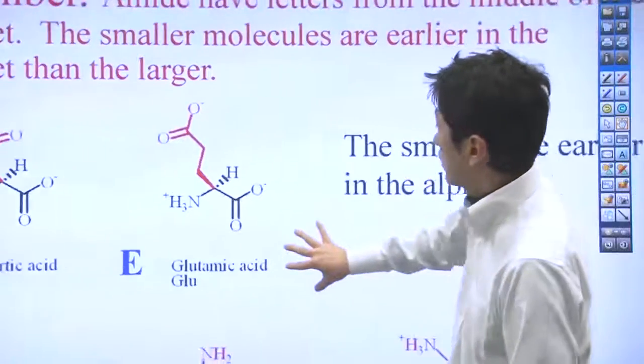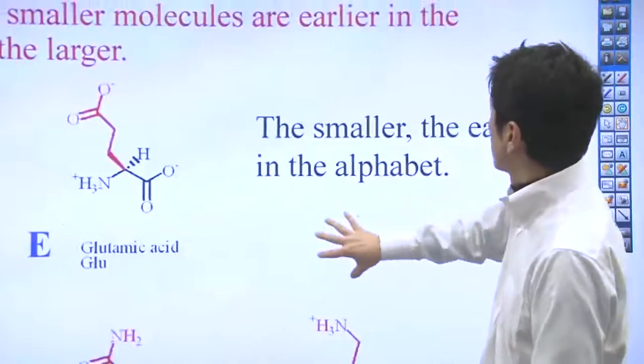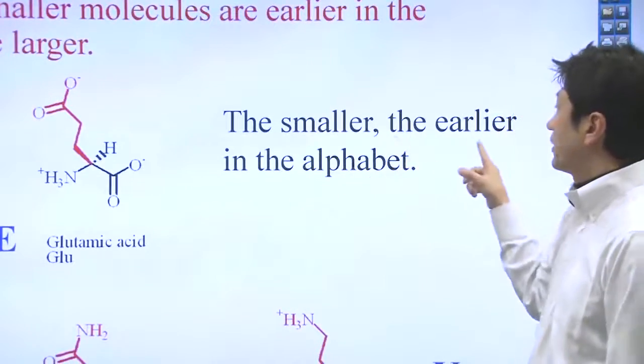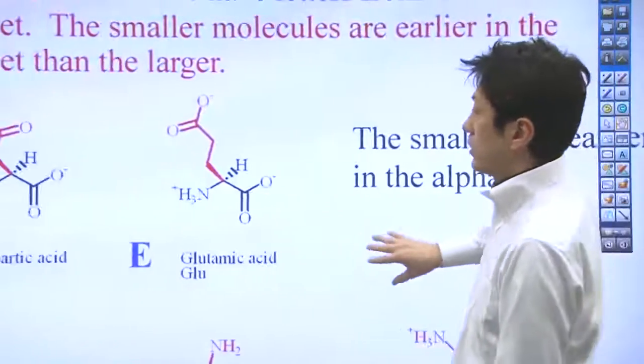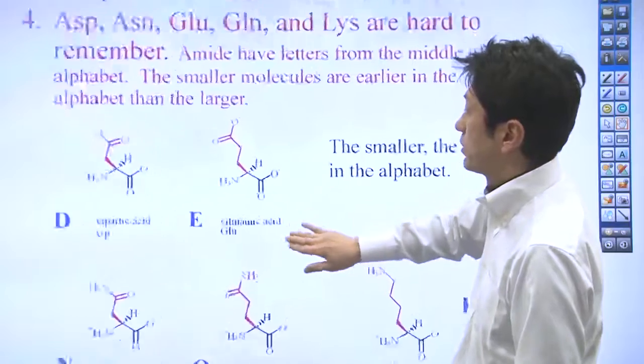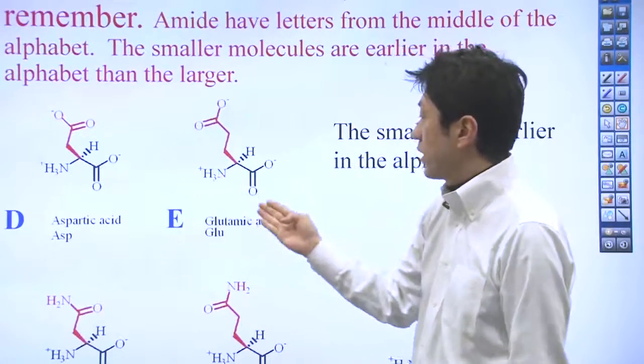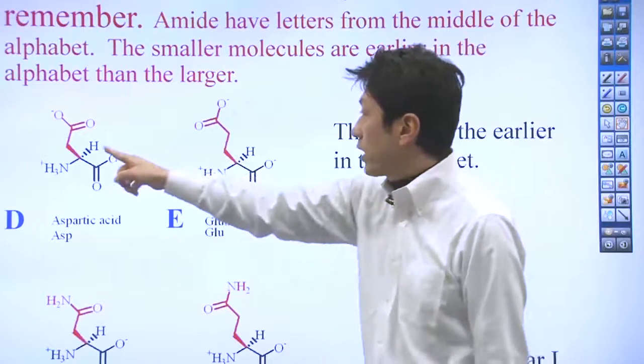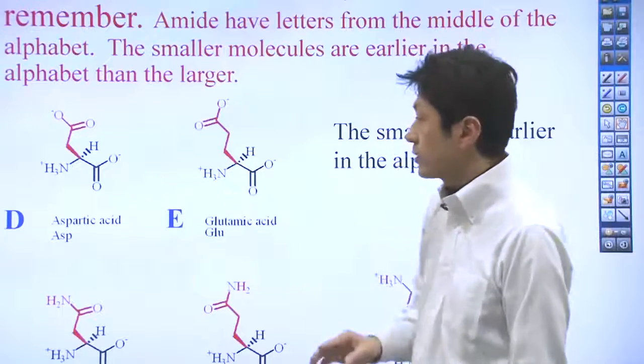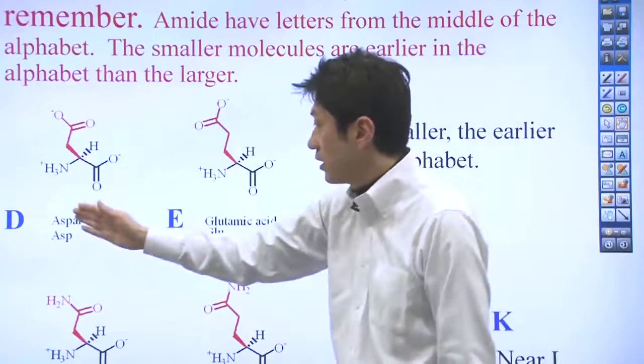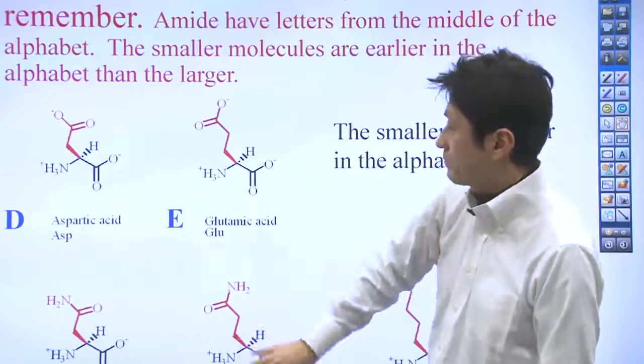You've got to get used to this. The trick is the smaller, the earlier in the alphabet. If you look at the structure here, aspartic acid is smaller than glutamic acid. One carbon is smaller. That's why we can use D for aspartic acid, E for glutamic acid.